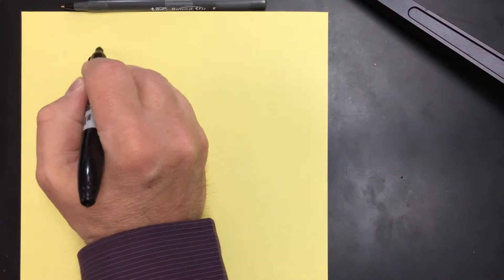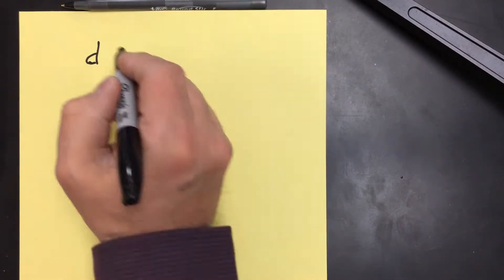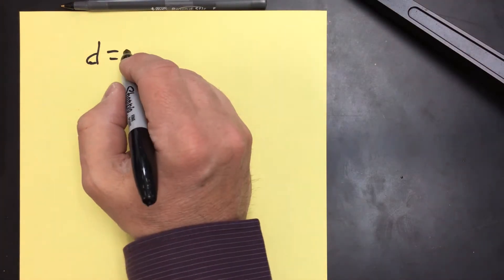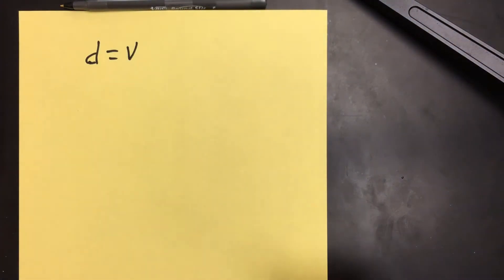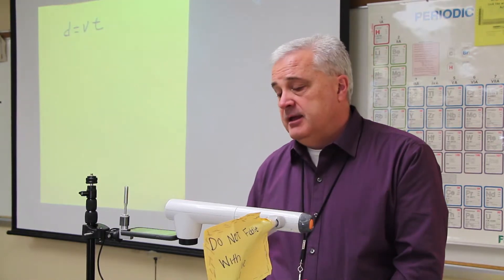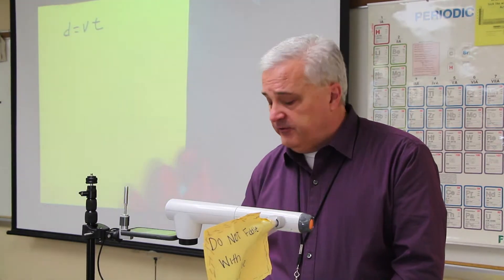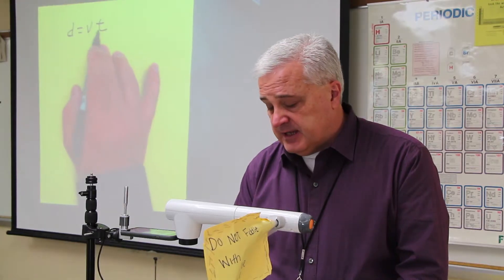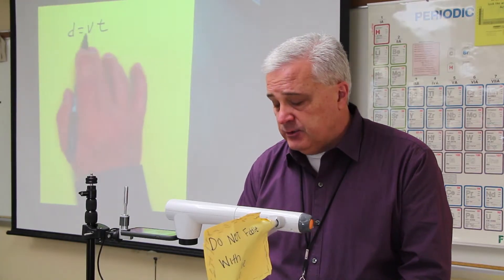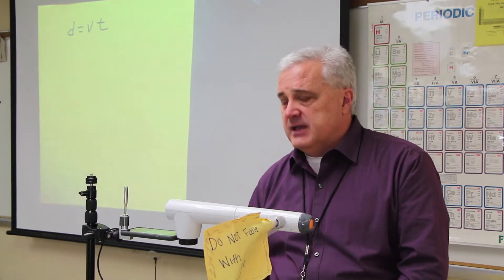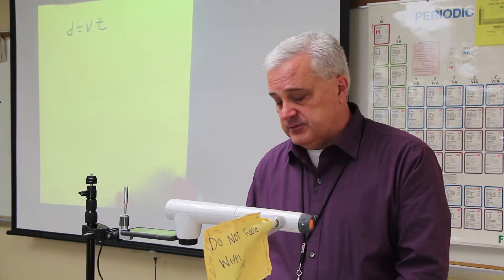In formula form: the distance traveled is equal to the velocity at which you're traveling multiplied by the time that you travel — very simple. If the velocity is 20 and the time is 3, twenty times three is sixty. This is the most elementary form of the physics problem.